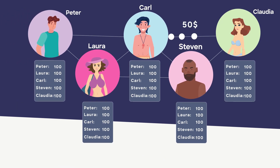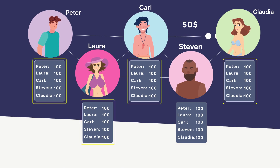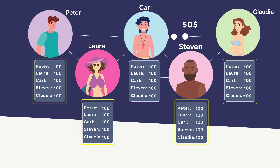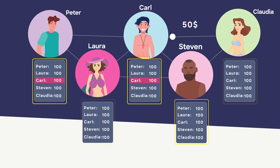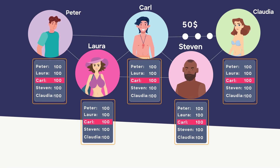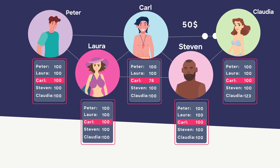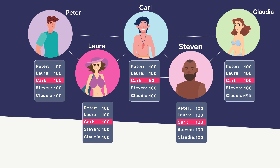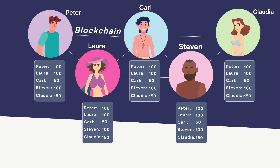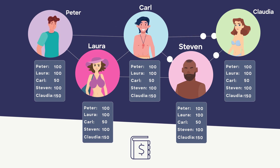Imagine Carl wants to give $50 to Claudia. In order to act like the blockchain, we should check all five notebooks at the same time to see if this transaction is possible. If not, the transaction will not happen. In this case, Carl has $100, which is verified in all the notebooks, so the transaction is approved and he can give $50 to Claudia. Now they all write that down in their notebooks again as a new entry on a new page. Most simply, this is a blockchain — a shared ledger, or a record of movements verified on all the nodes or people involved.